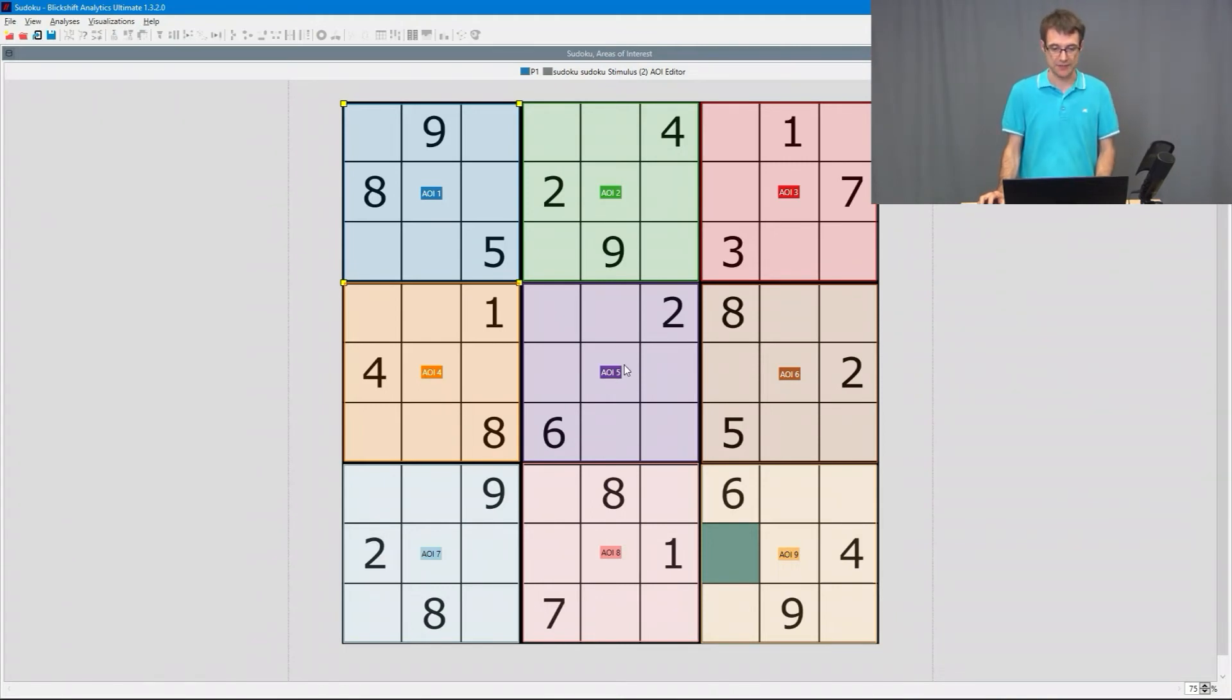Here we can see the Sudoku table again with areas of interest. Like for example on the top you can see the area of interest number one, number two, number three. And the areas of interest are regions covering specific areas on the stimulus. And using these areas of interest we can compute further metrics which are called gaze duration metrics.